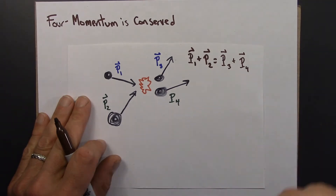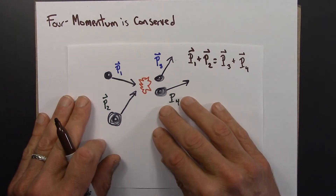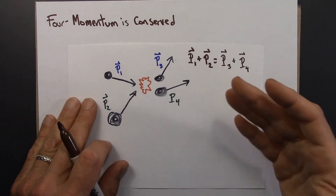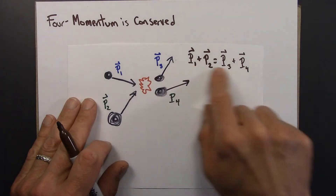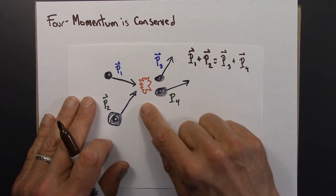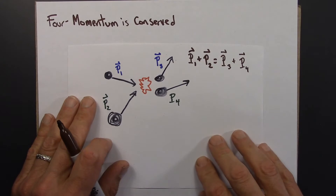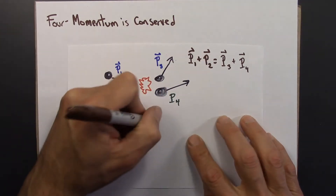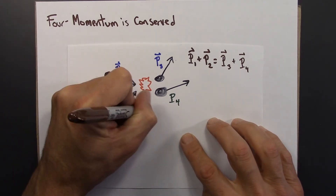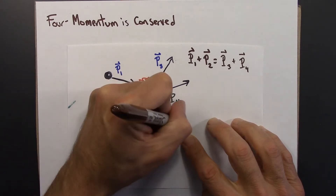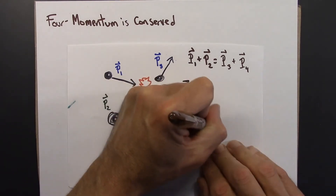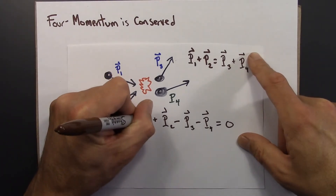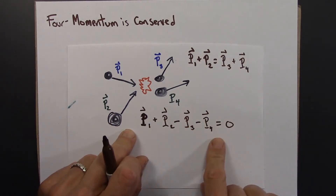This is something we would want to also have be the case in special relativity. So we constructed 4-momentum because classical momentum isn't conserved under special relativity — if this equation is true in one reference frame, it's not true in another reference frame using classical momentum. And that's a big problem. Let me write this condition in a slightly different way to make the algebra easier: p1 plus p2 minus p3 minus p4 equals 0.